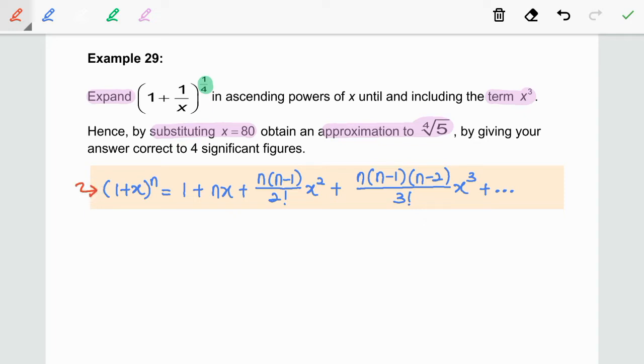First, let us identify x and n by comparing (1 + 1/x)^(1/4) with (1 + x)^n. As we see here, x is equal to positive 1/x and n refers to the power number which is 1/4.